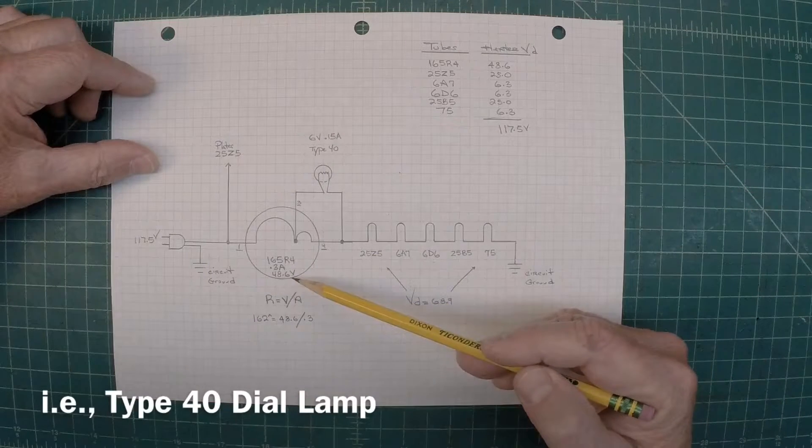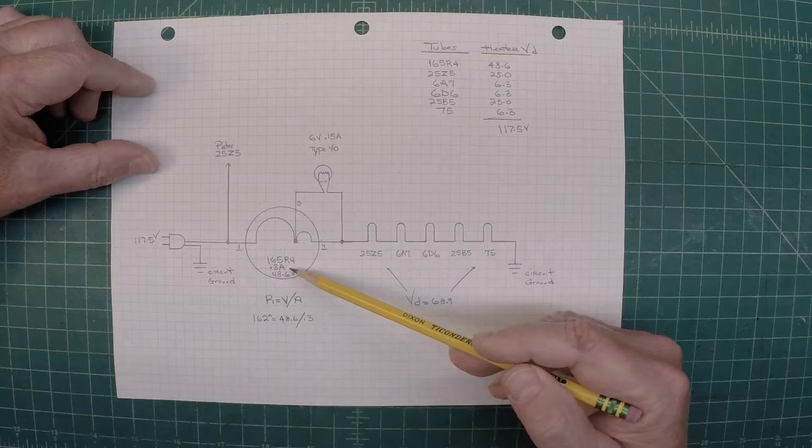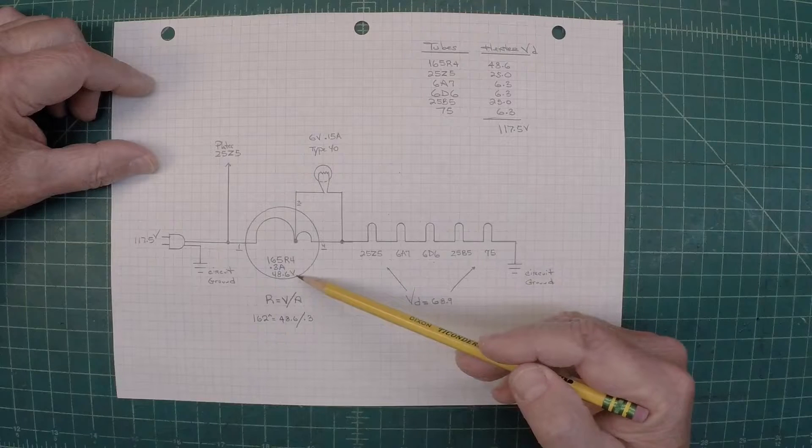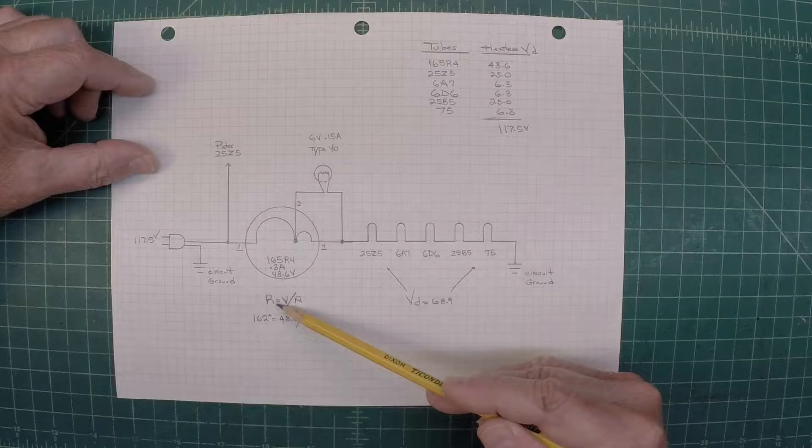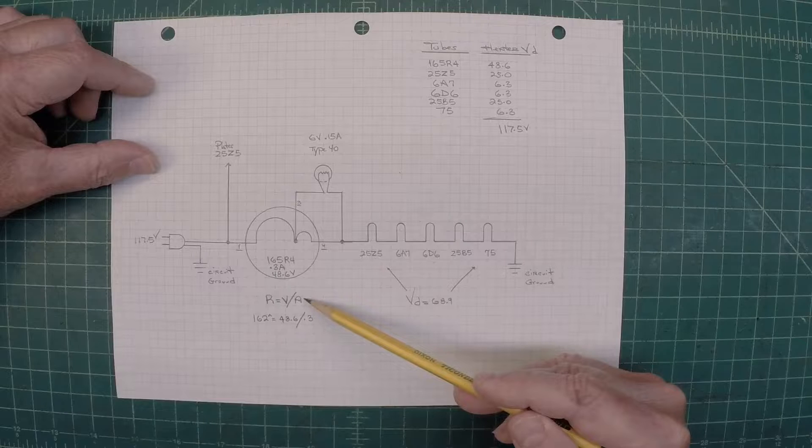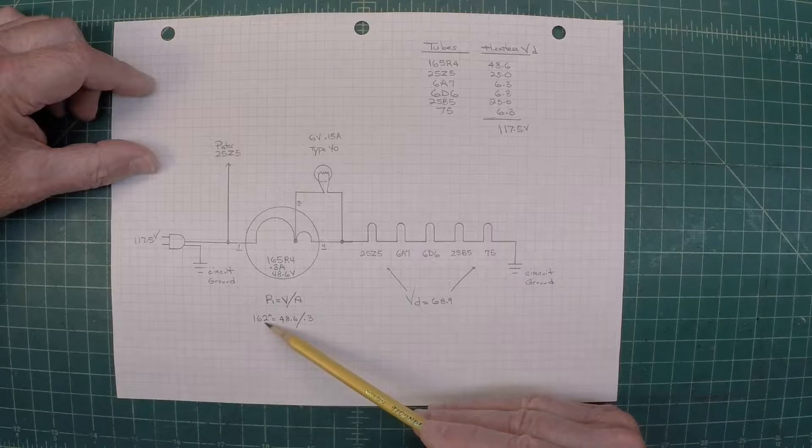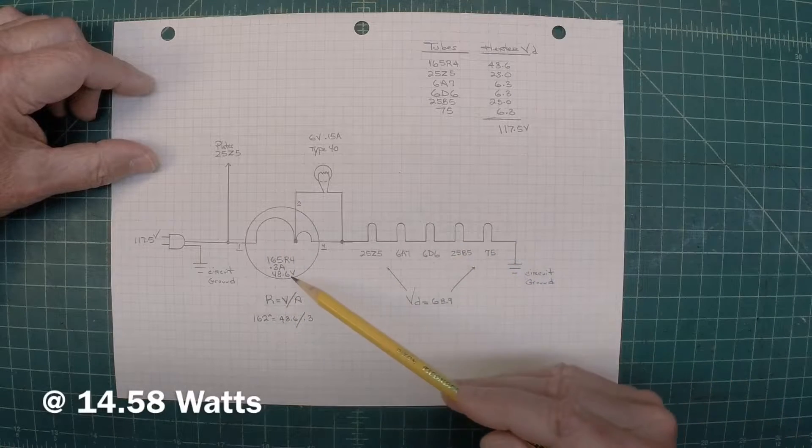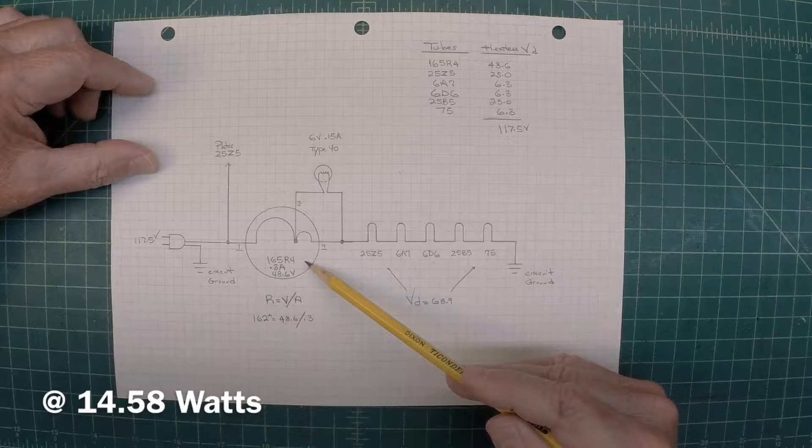So looking at the specs on the tube, the 165R4, it's rated at 300 milliamps or 0.3 amps, 48.6 volts. And you can see if you do the math, looking at the resistance itself would be equal to the voltage divided by the current flow. So doing the math, that comes out to 162 ohms, roughly, is what would be required to get the voltage drop that we need.